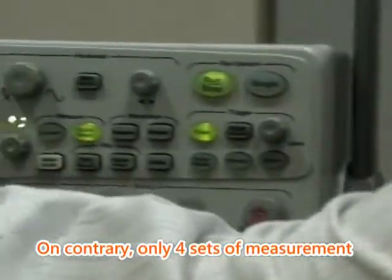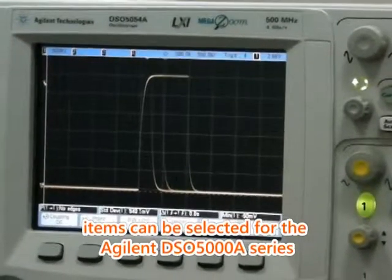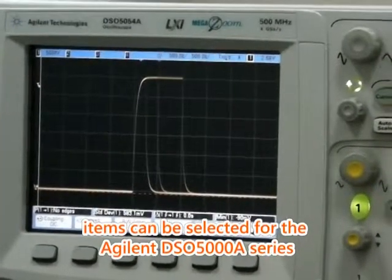On the contrary, only 4 sets of measurement items can be selected for the Agilent DS-05000A series.